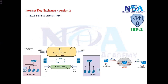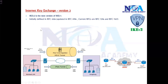IKEv2 is the next version of IKEv1 - it is the successor of the previous version. IKEv2 has more advanced features and is more secure than version 1, while the core functionality remains the same, retaining most IKEv1 features with some enhancements. Initially IKEv2 was defined in RFC 4306, later updated in RFC 5996, and the current RFCs defining IKEv2 are RFC 7296 and RFC 7247.